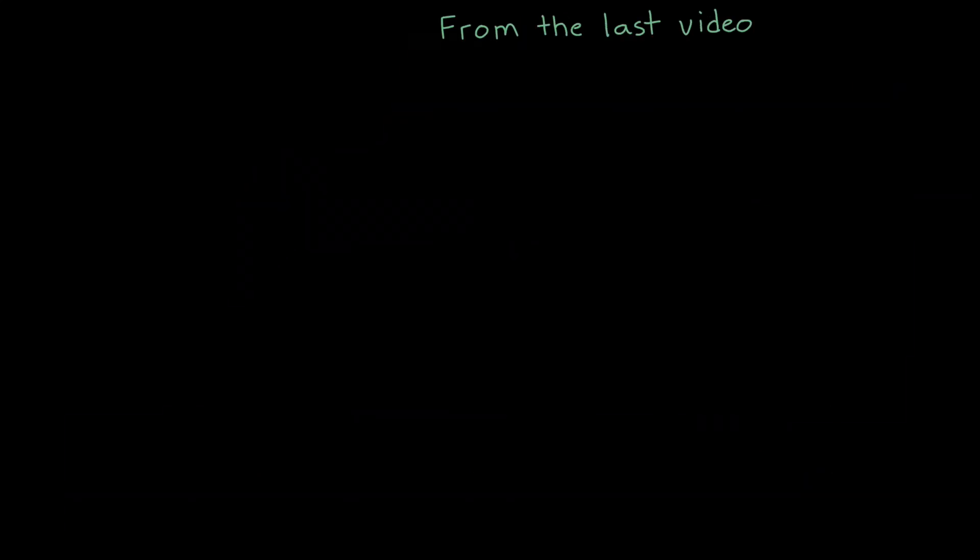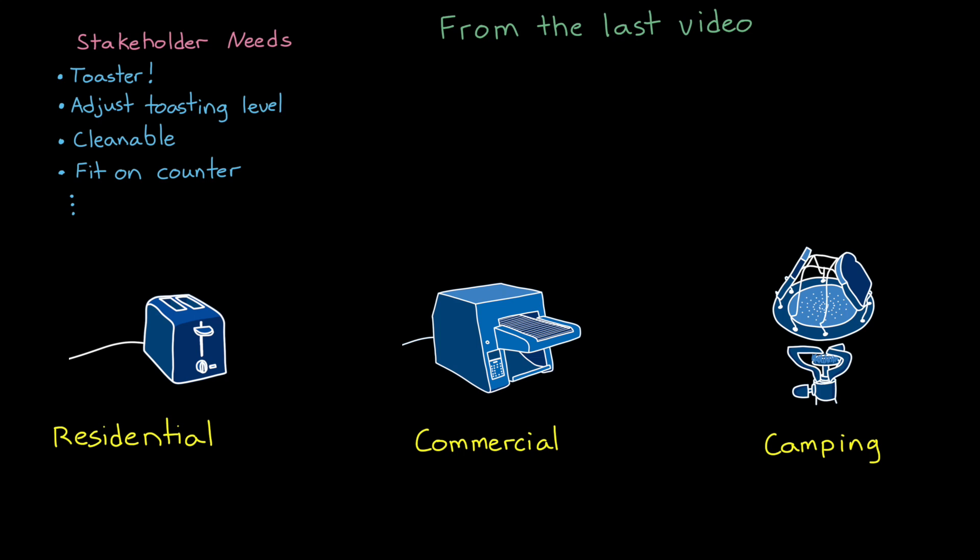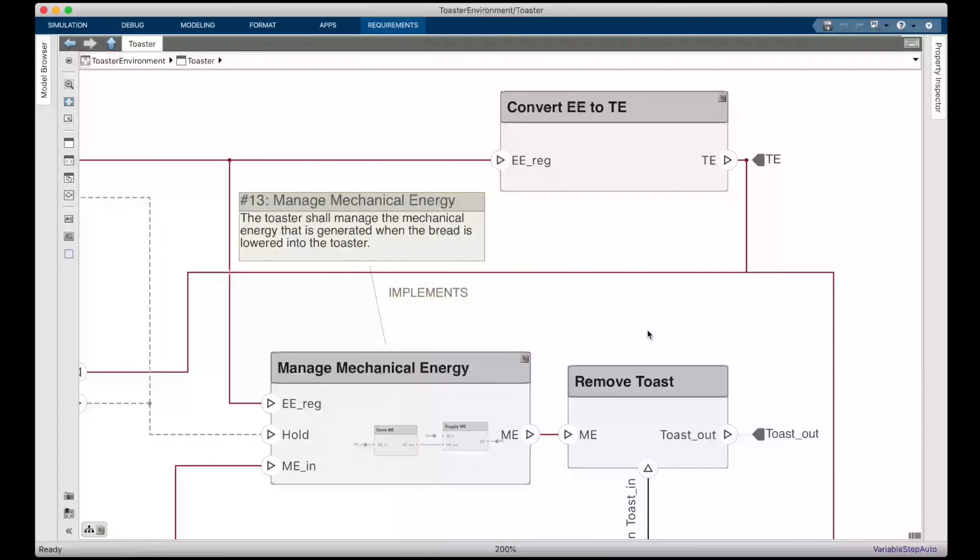As an example, in the last video, we talked about how a toaster could be a residential toaster or a commercial toaster or a camping toaster. The high level needs of the stakeholder drove us down the path of creating a residential toaster. This was a concept that we chose to pursue, and once we decided on this path, we were able to further refine the functional requirements. We have a functional requirement that the toaster must manage and store the mechanical energy that is generated when the bread is lowered into the toaster. This requirement only makes sense to levy on the design for the residential toaster. So it's implementation specific, but it still isn't forcing an implementation because it's not telling us how to manage and store mechanical energy.